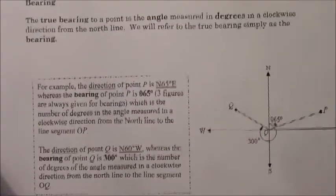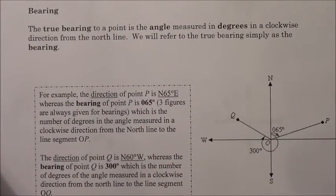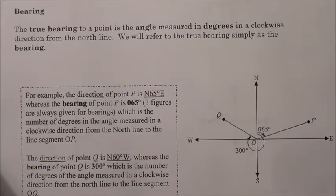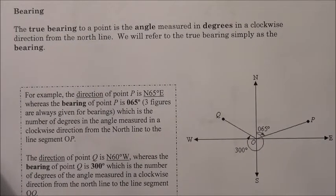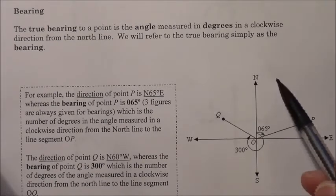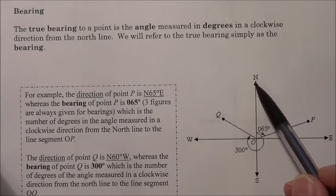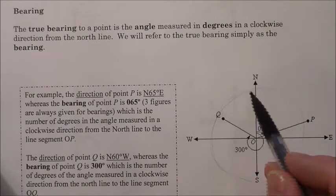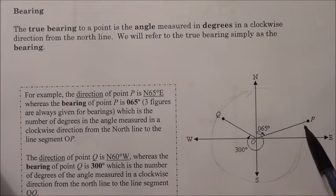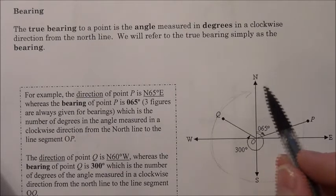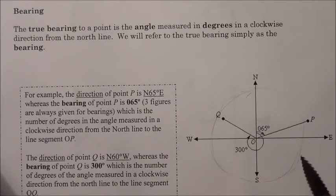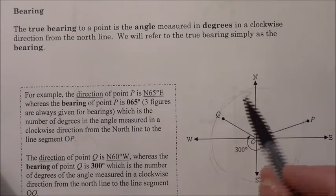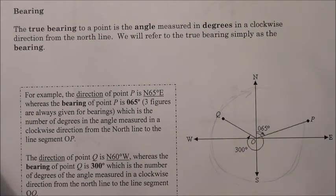Those are the cardinal directions. We also have things called bearings. Bearings are the same sort of idea, except they don't use north, south, east, and west. Instead, they just measure the degrees from north in a clockwise direction, starting at zero and counting up — up to 90, up to 180, up to 270, and then back up to 360. Whatever angle you get to, that is the bearing.